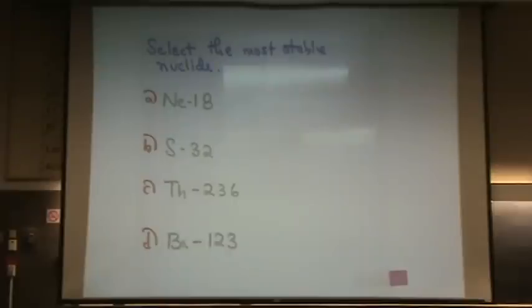Remember, stable nuclides tend to be even-evens. There are some examples where they're not even-evens, but they're pretty rare. So, D is not winning this over. The one that looks like the best-case scenario is B, sulfur-32.